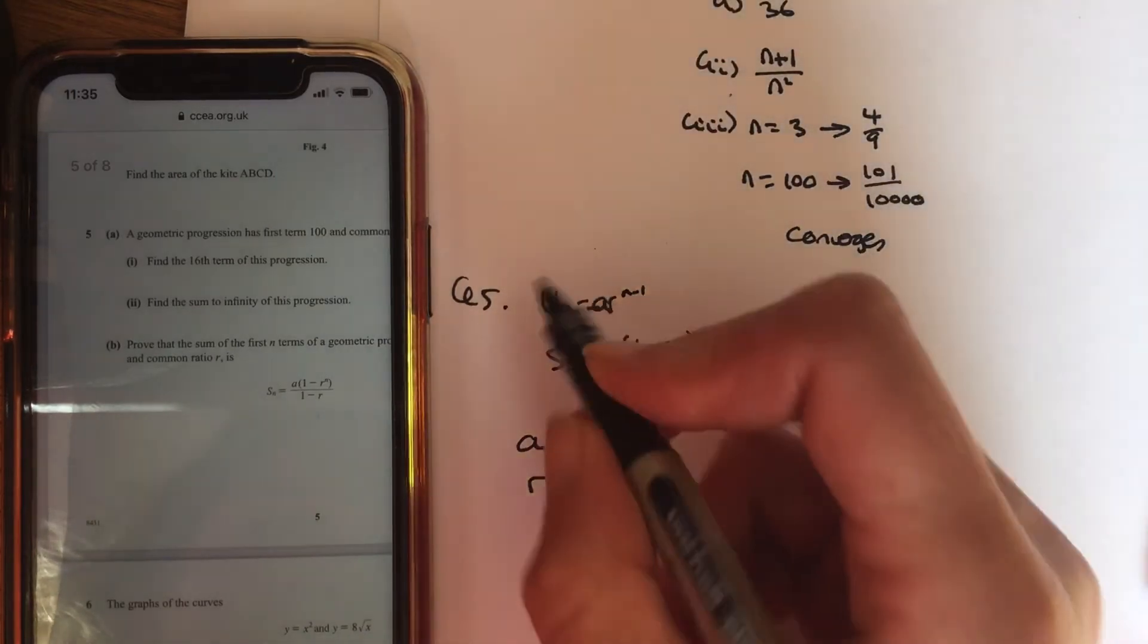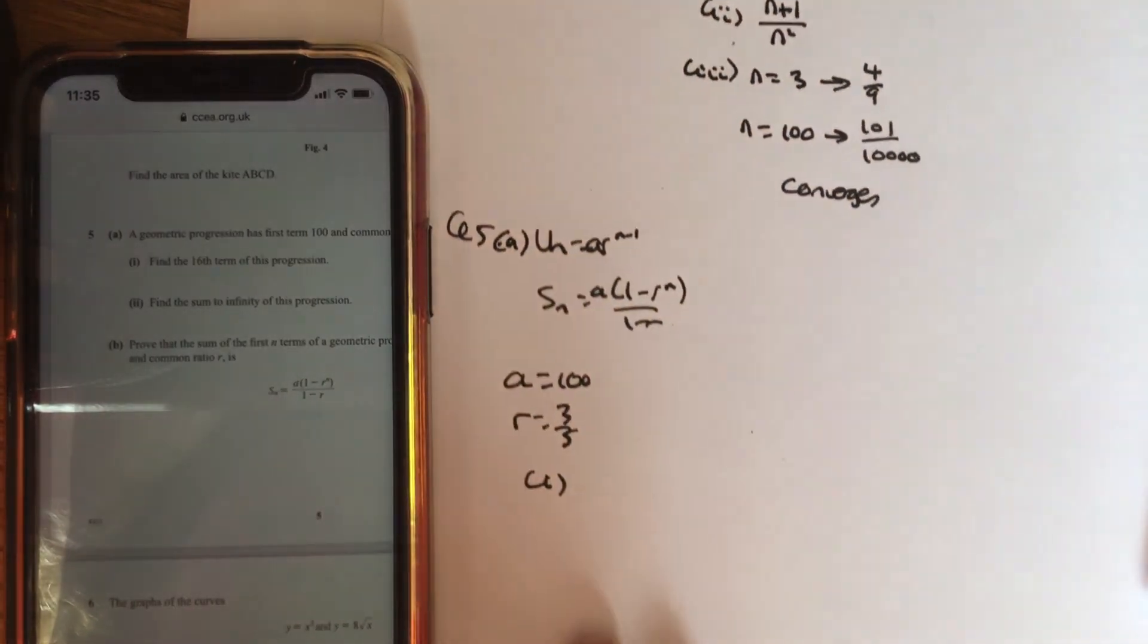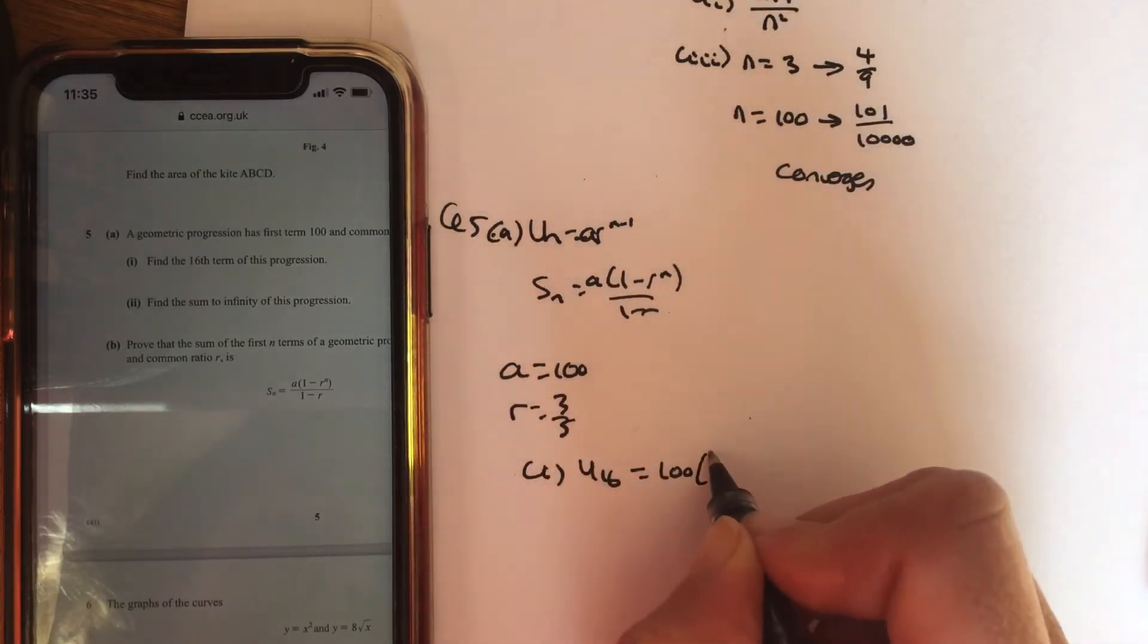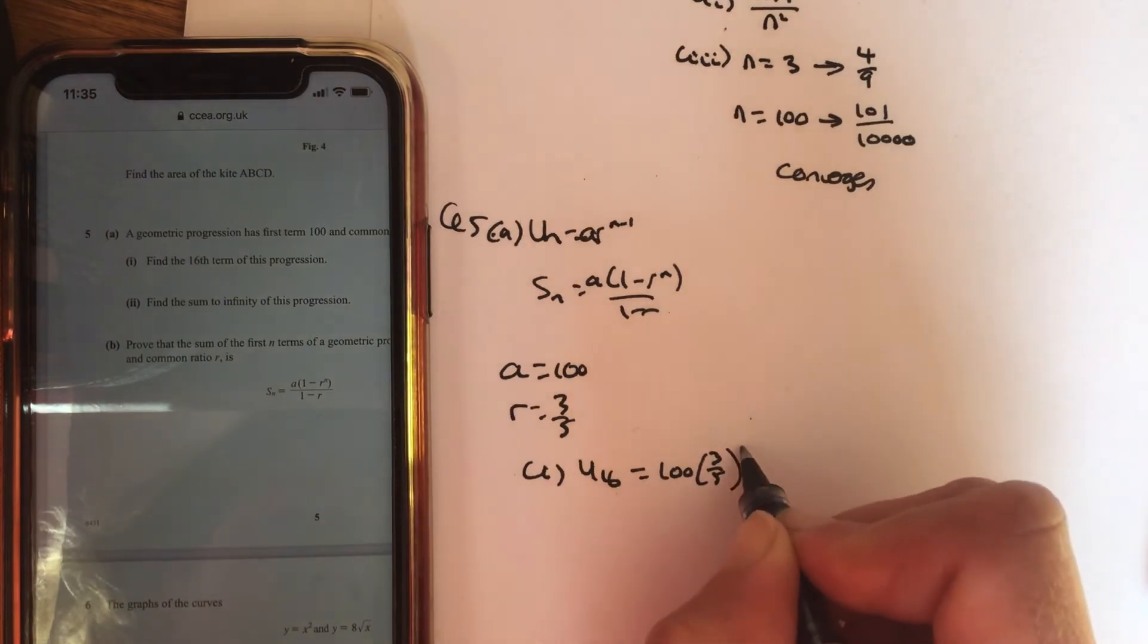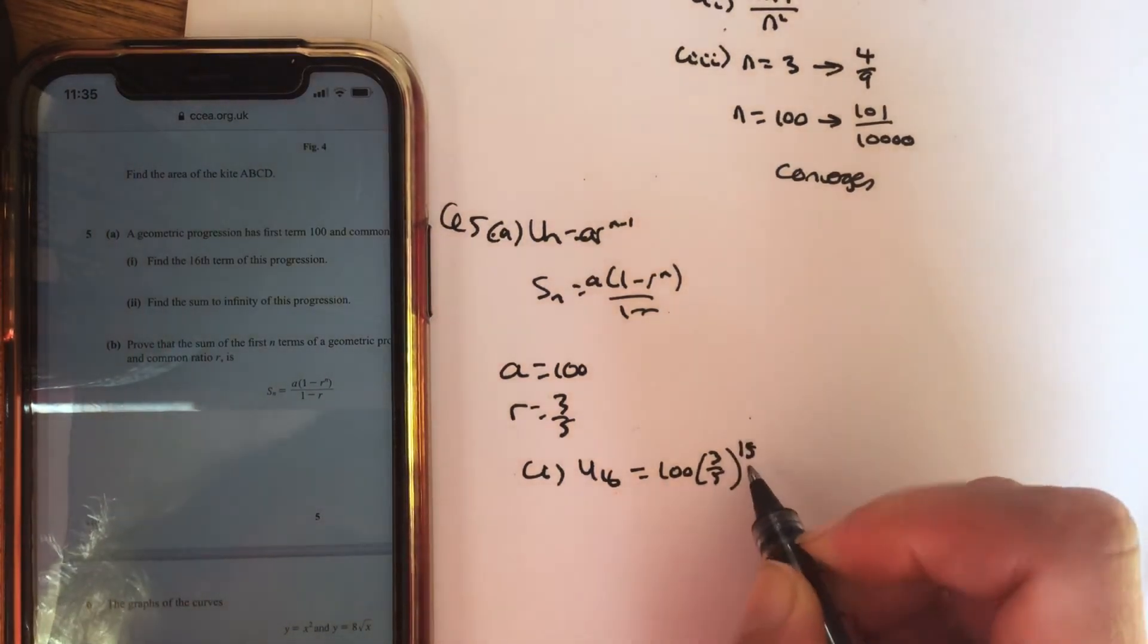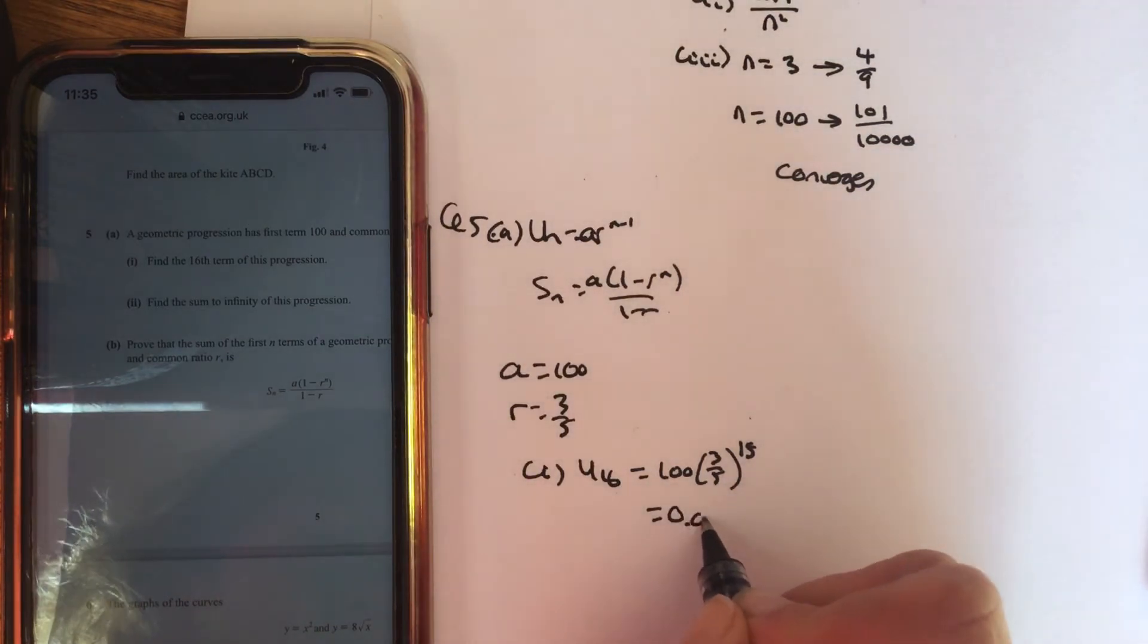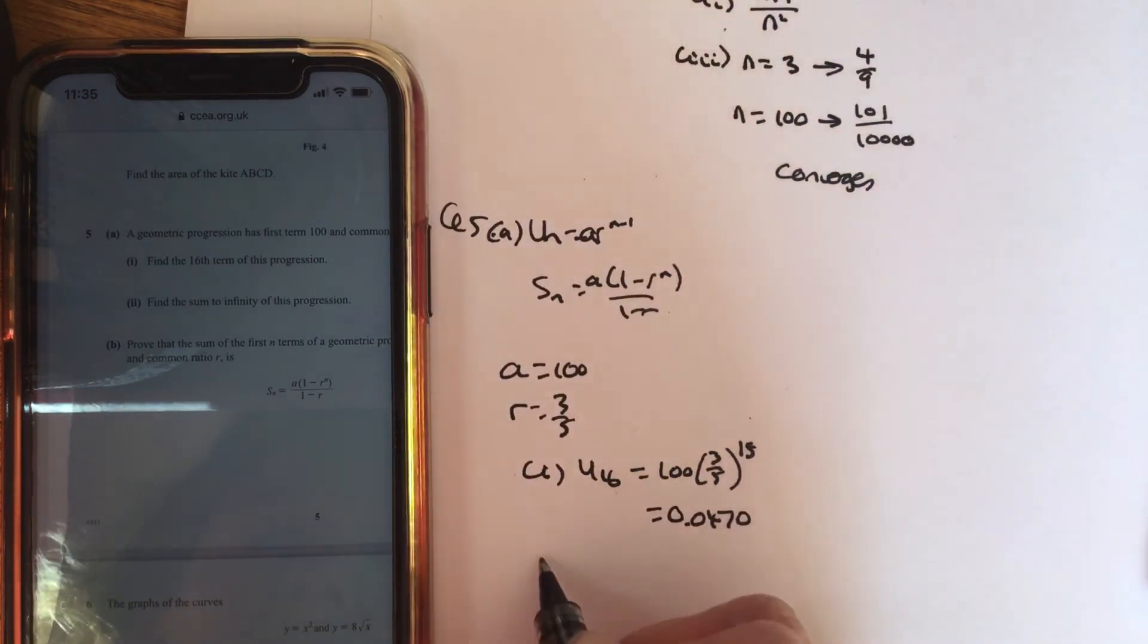Part 1, quite straightforward, is looking for the 16th term. So just using your term formula. So u16 is ar^(n-1), 16 minus 1 is 15. And if you work that out, you should get the answer of 0.0470 to 3 significant figures.